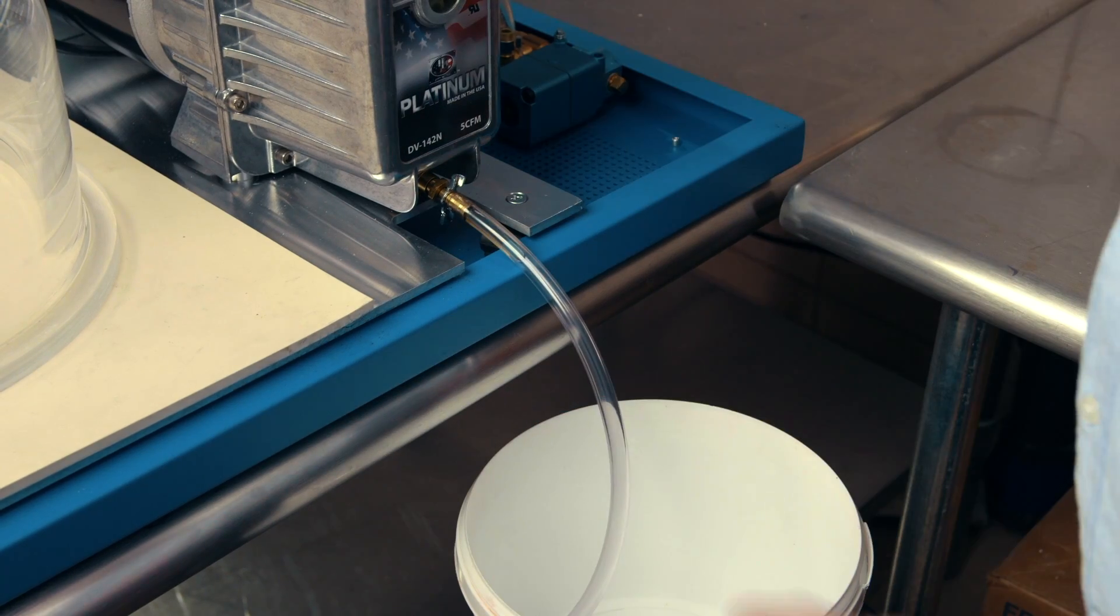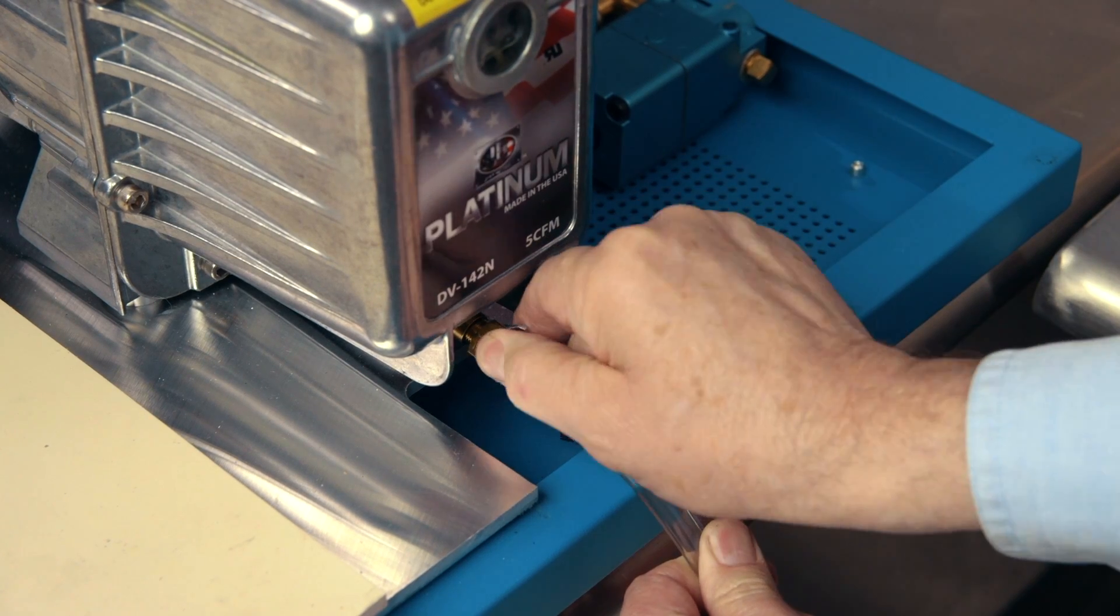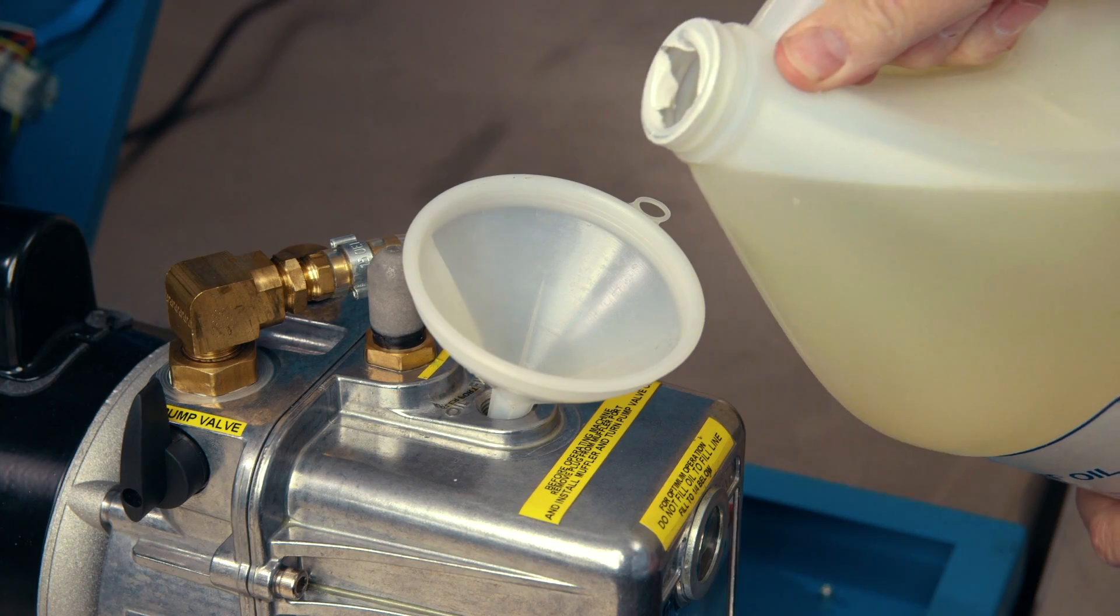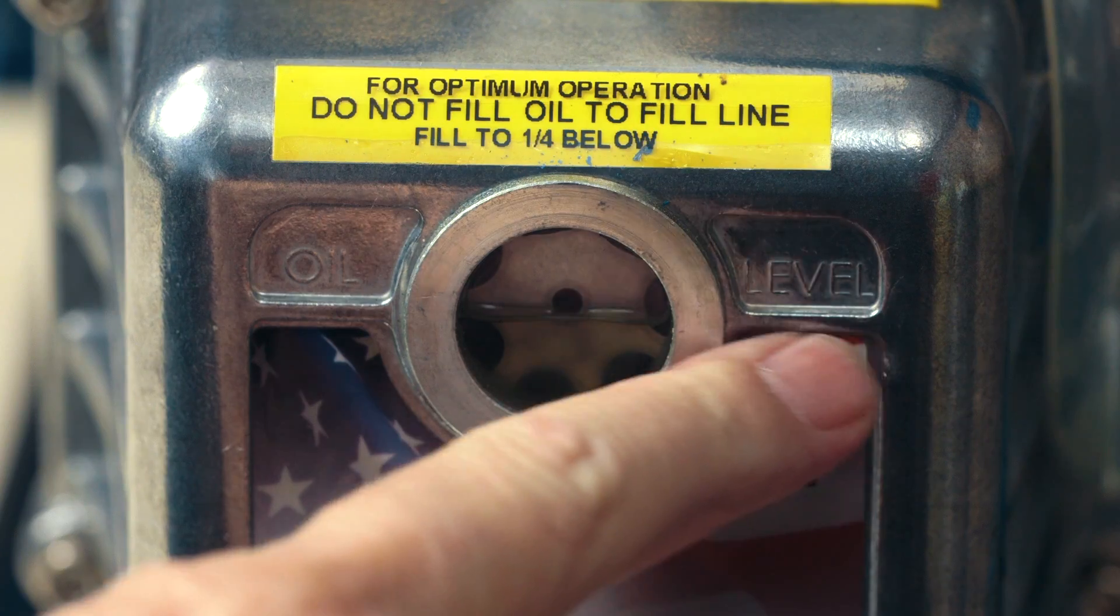Open the drain valve and empty the flushing oil. Then close the valve. Then simply refill the pump with vacuum oil as demonstrated earlier.